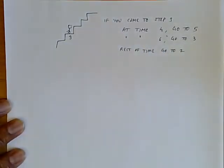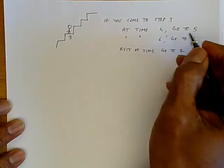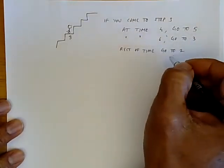So this is certainly well defined. There's no ambiguity about what the rules are. If you come at time four, you say, okay, go to five, six, go to three, go to two.